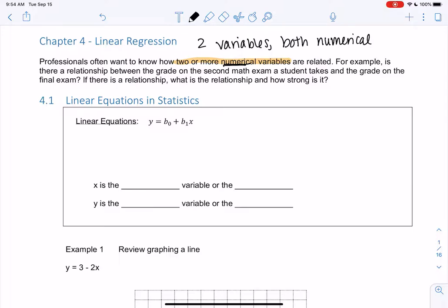So maybe we want to see, is there a relationship between the grade on your second exam and the grade on your final? So those would be my two variables: grade on second exam, grade on final. And then if there is a relationship, what is that relationship and how strong is it? So these are questions we'll answer as we go through the chapter.